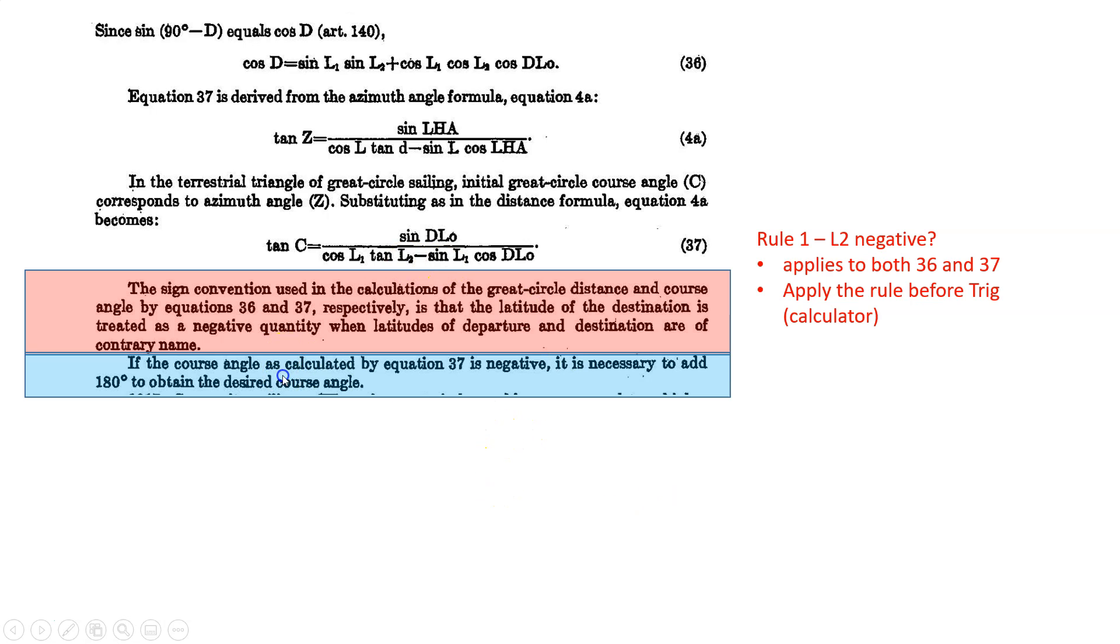You've got to say, every time that latitude 2 shows up, you've got to make that a negative. So it's going to be cosine of a negative. Here it would be tangent of a negative. Very important. Now, there's another rule just underneath it. If the course angle, course angle is C. Well, this rule only applies to 37 because there's no C term in Formula 36. So this second rule only applies to this. The first rule applied to cosine D and tan C. But this second rule, and also the third rule, are only going to apply to the tan C. So if the course angle is calculated, that means I use my calculator. This formula is going to apply after I use my calculator. This is a very important distinction.